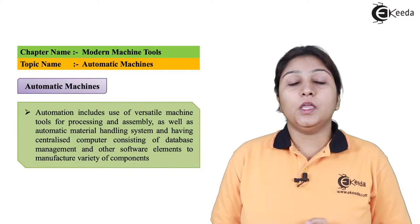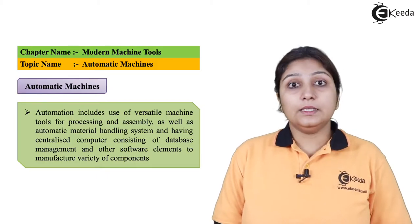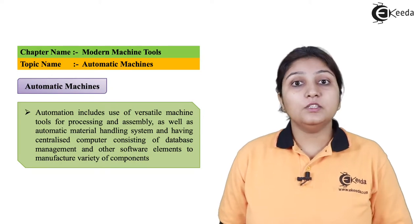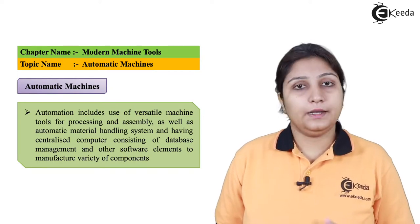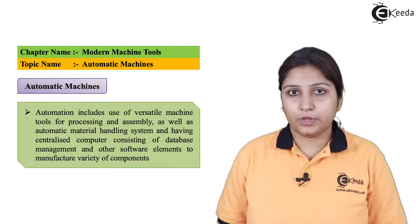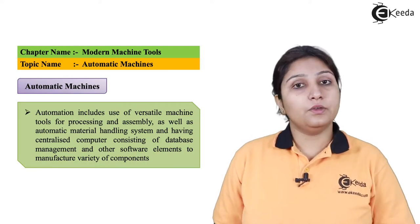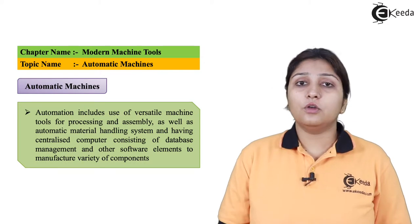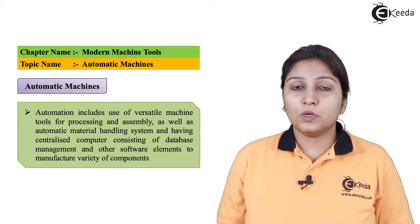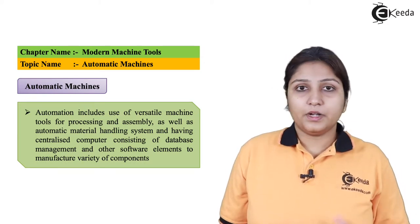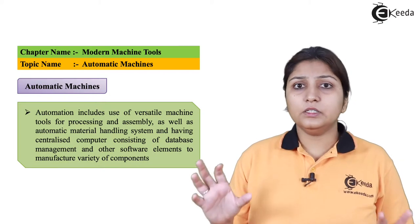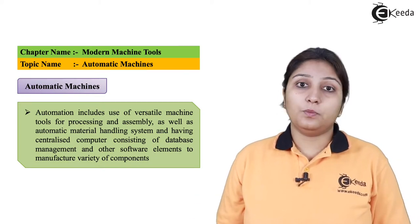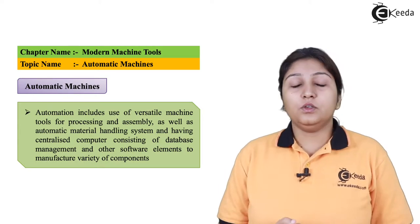In automatic machines, the assembly line, programming, or any operation is controlled by a single database which has certain software. That software is given part programming and it controls the machining operation. A skilled labor is required only to operate that software and to see that the operation is going on smoothly. This is the beauty of the automatic machining system.